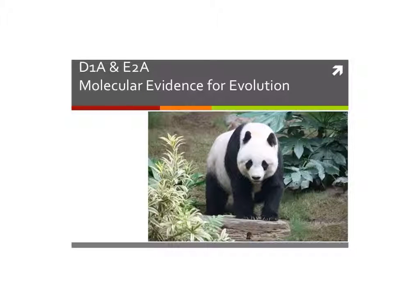So in the first lesson of this unit, we looked at the classification system of all living things you can find on this earth. Now we're going to take a look at how all those living things are related to each other through a piece of evidence we call molecular evidence.